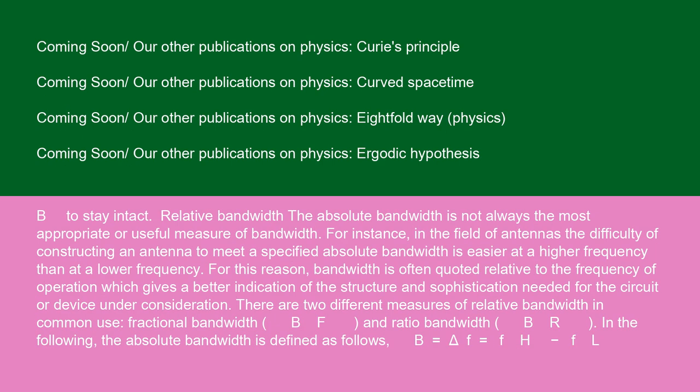Relative bandwidth: the absolute bandwidth is not always the most appropriate or useful measure of bandwidth. For instance, in the field of antennas, the difficulty of constructing an antenna to meet a specified absolute bandwidth is easier at a higher frequency than at a lower frequency. For this reason, bandwidth is often quoted relative to the frequency of operation, which gives a better indication of the structure and sophistication needed for the circuit or device under consideration. There are two different measures of relative bandwidth in common use, fractional bandwidth, BF, and ratio bandwidth, BR. In the following, the absolute bandwidth is defined as follows: B equals delta F equals FH minus FL,